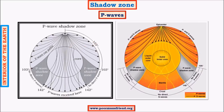Now let us look at the shadow zone for primary waves or longitudinal waves. Primary waves have a different nature of shadow zone. Unlike secondary waves, the shadow zone for primary waves is much more confined and smaller in extent. This is mainly due to the behavior of primary waves.